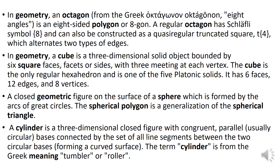A sphere is formed by the arcs of a great circle. The spherical polygon is a generalization of the spherical triangle.